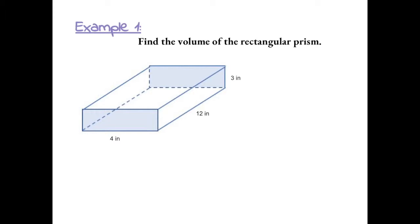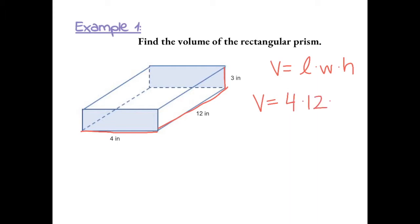Example 1: Find the volume of the rectangular prism. The formula for volume is length times width times height. We have 4 by 12 by 3, so we need to do 4 times 12 times 3. 4 times 12 gives us 48.